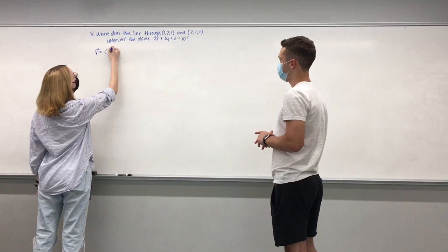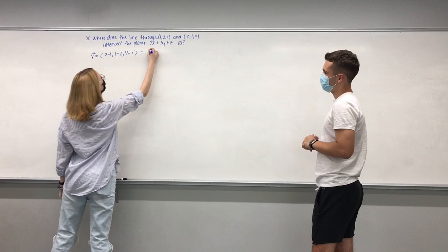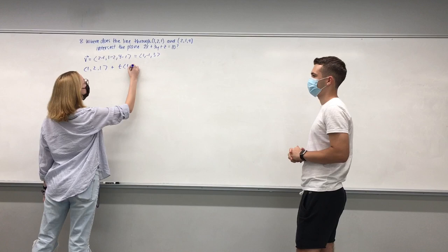First thing you want to do is do terminal minus initial in order to get the direction vector for the line equation. And then once we have that, we can make the line equation by doing the point, pick either one, plus t times the direction vector.